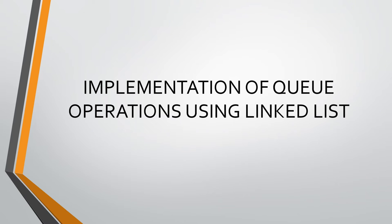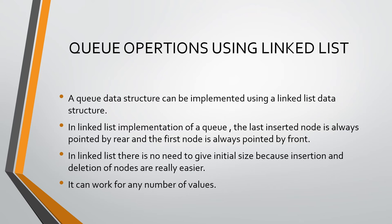In this video I am going to explain the implementation of queue operations using linked list. We can implement queue operations using a linked list. As we know, in a linked list the node always contains two values: one is data and another is the address field. The insertion and deletion of nodes are easier in a linked list, so there is no need to give an initial size, which is an advantage over arrays where we have to give an initial size before creating a queue.